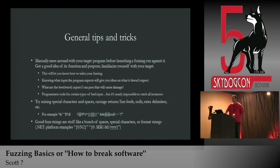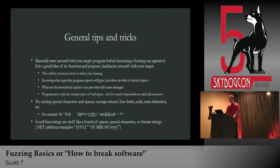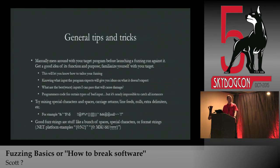Some general tips and tricks: mess around with your target program first before fuzzing it. You don't have to know it inside and out, but the better you understand how it works properly, the better you can tailor your fuzzing to break it — you can ask yourself 'what are the best or worst inputs I can pass to it that will cause damage?' A lot of programmers — including myself — code for certain types of bad input, but it's almost impossible to catch all instances. Try mixing up special characters, spaces, carriage returns, line feeds, and format strings. There are some .NET platform-specific examples including C#-specific format strings.